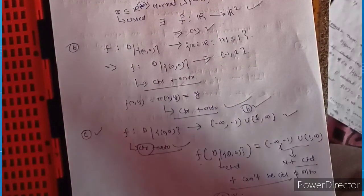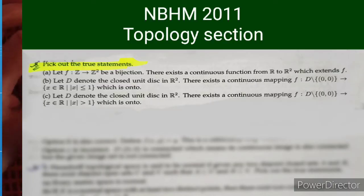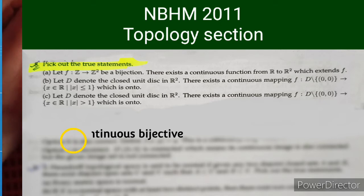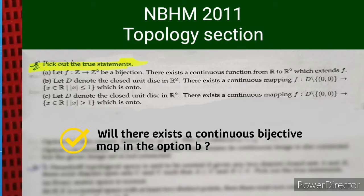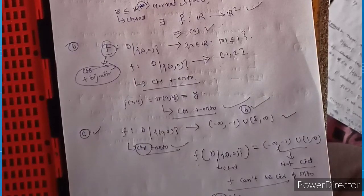This implies the third statement is wrong. Now suppose in statement B we ask: does there exist a continuous bijective map f? You can give your answer in the comment section. Thank you.